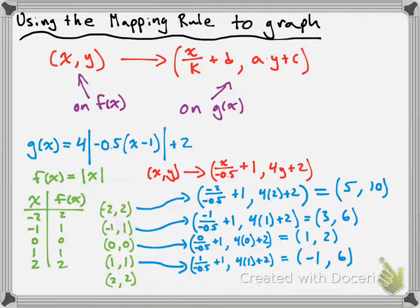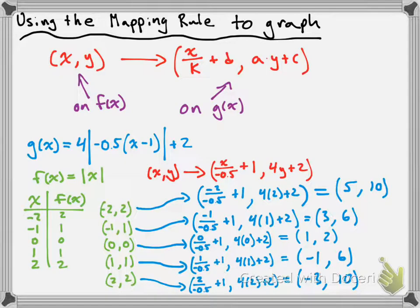And lastly, the point (2, 2): x becomes 2 divided by negative 0.5 plus 1, and y becomes 4 times 2 plus 2. 2 divided by negative 0.5 is negative 4, plus 1 is negative 3. And 4 times 2 is 8, plus 2 is 10. So (−3, 10) is also a point on my transformed function.